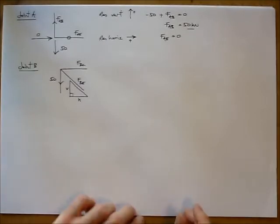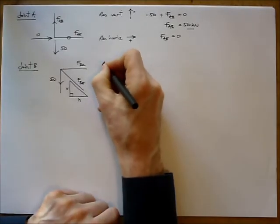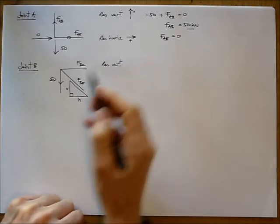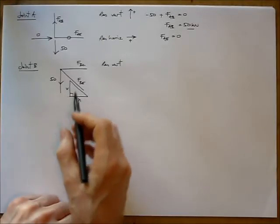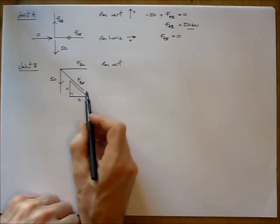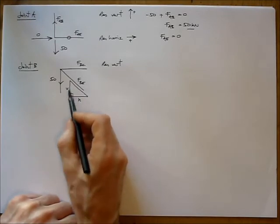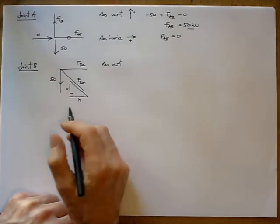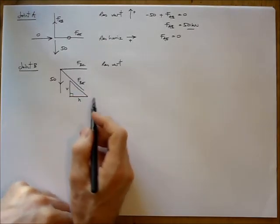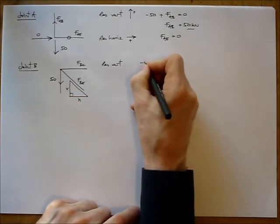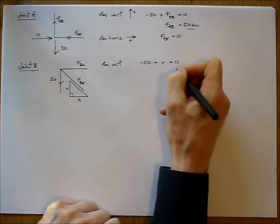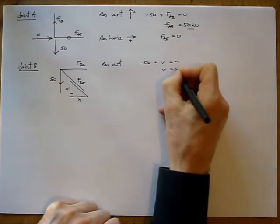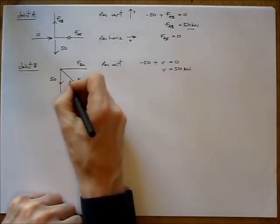For this thing, I'll start by resolving vertically. The vertical forces acting at this joint B are 50 and V. I'm going to ignore this diagonal member for the moment because I'm choosing to look at its vertical and horizontal components instead. Anything horizontal has no effect when I resolve vertically. So minus 50, assuming that V acts upwards, plus V equals 0. Therefore V equals 50. And that was correct. It is acting upwards.